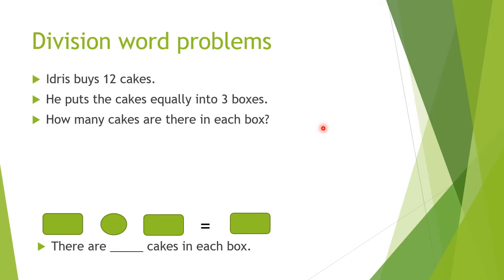First we need to choose the smaller number. So between 12 and 3, which one is smaller? 12 or 3? So 3 is the smaller number.